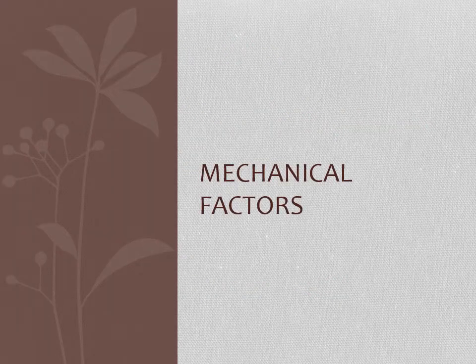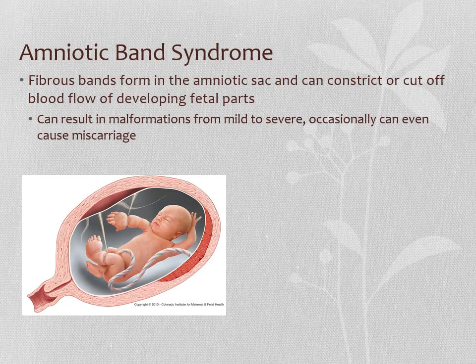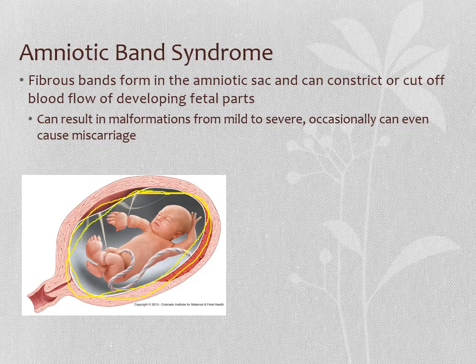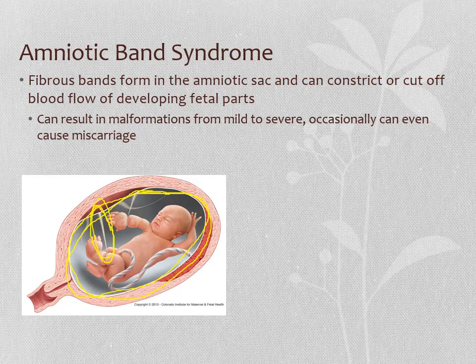We're going to focus on mechanical factors first. One example is amniotic band syndrome. When the fetus is inside the uterus, it's in an amniotic sac filled with fluid, allowing the baby to move around. In some cases, fibrous bands — almost like scar tissue — can form inside the uterus, possibly due to infection or inflammation. As the baby moves around, these bands can accidentally wind around parts of its body, like the wrists.